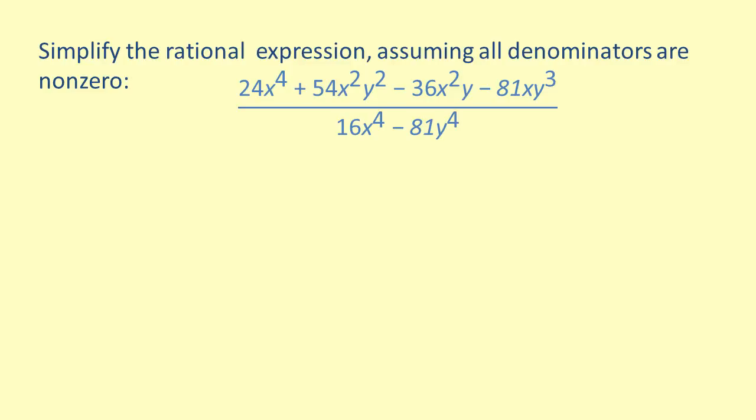Let's factor the rational expression, the quantity 24x to the fourth power plus 54x squared y squared minus 36x squared y minus 81xy cubed, all divided by the quantity 16x to the fourth power minus 81y to the fourth power.